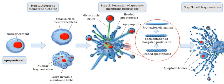Apoptotic DNA fragmentation relies on an enzyme called caspase-activated DNase (CAD). CAD is usually inhibited by another protein in the cell called inhibitor of caspase-activated DNase (ICAD). In order for apoptosis to begin, an enzyme called caspase-3 cleaves ICAD so that CAD becomes activated. CAD then cleaves the DNA between nucleosomes, which occur in chromatin at 180 base pair intervals. The sites between nucleosomes are the only parts of the DNA that are exposed and accessible to CAD.